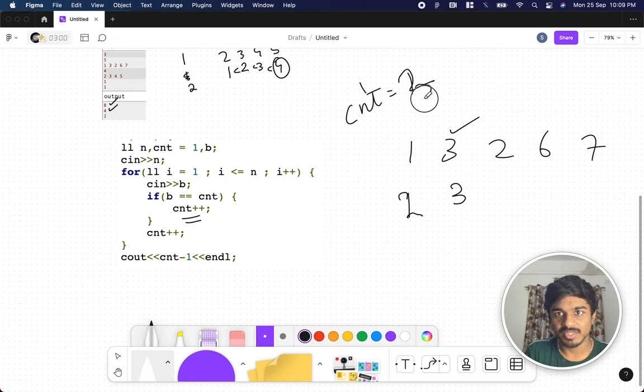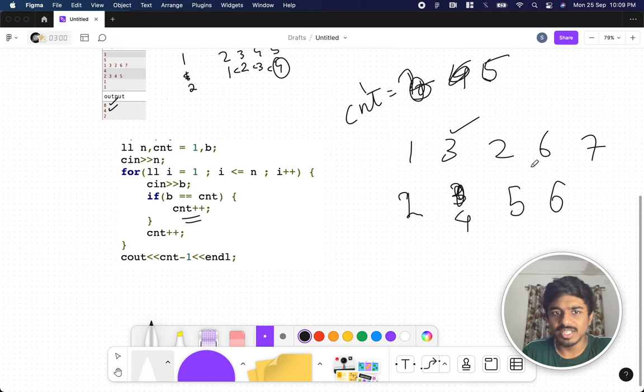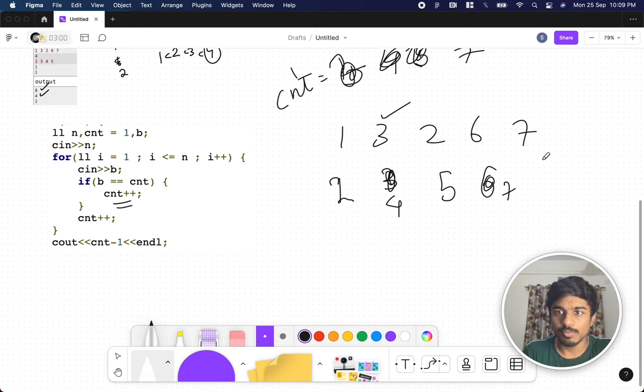Now we take the next element, which is 3. b equals count (3 equals 3), so I increment the count. Count gets incremented, so I'm assuming the position here is 4. Again, count plus plus means it becomes 5. Everything is fine. Now I go to 6, and 2 is different, so it goes to 6. Now both are the same (6 and 6), so I need to increment my count.